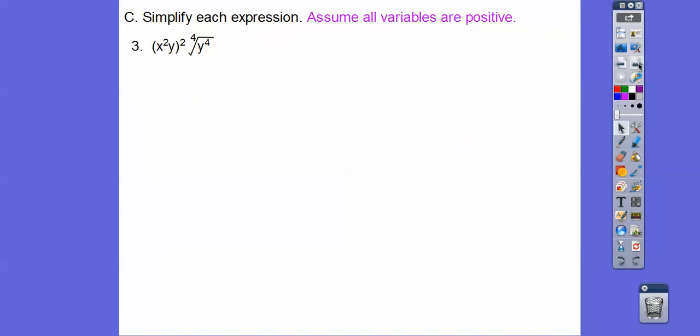All right, here's the next one. x squared y, and then quantity squared times the fourth root of y to the fourth. All right, so powers raised to powers, I multiply them. Two times two gets me this four. There's an imaginary one there. One times two equals two. And then this four is the top. This four is the bottom right there. This is one right here. And then what are we going to do with those exponents? With the y's, we are going to add them. So two plus one is going to give us y to the third right there. So x to the fourth, y to the third.